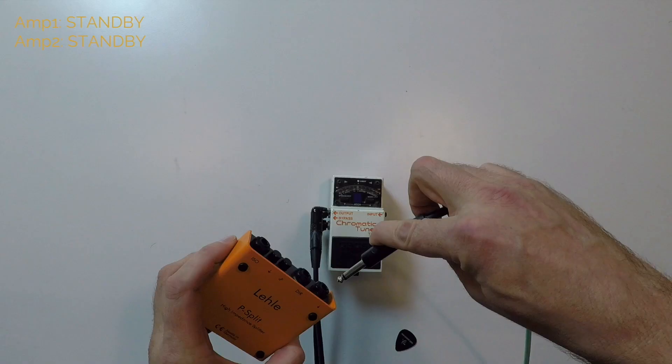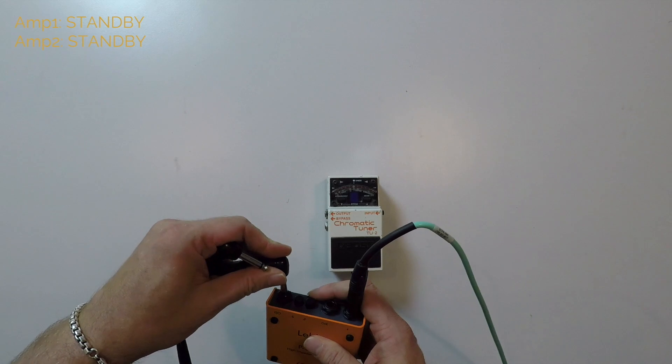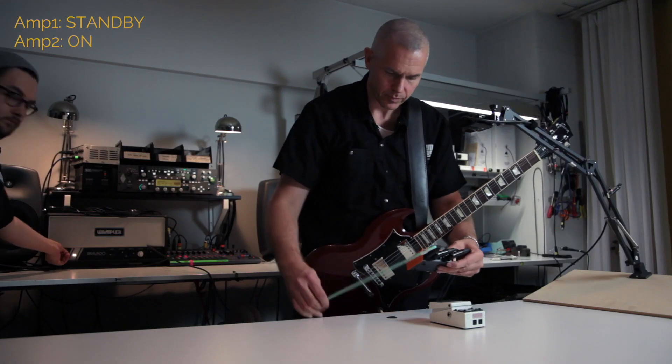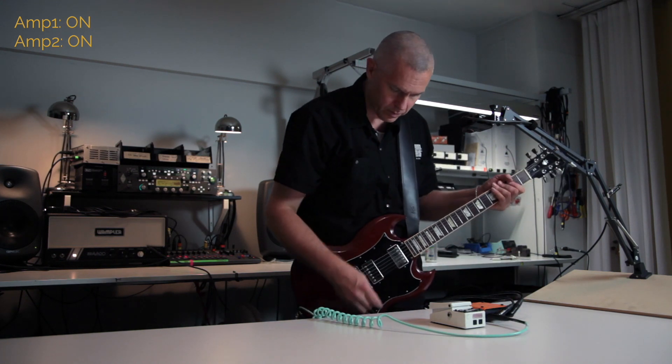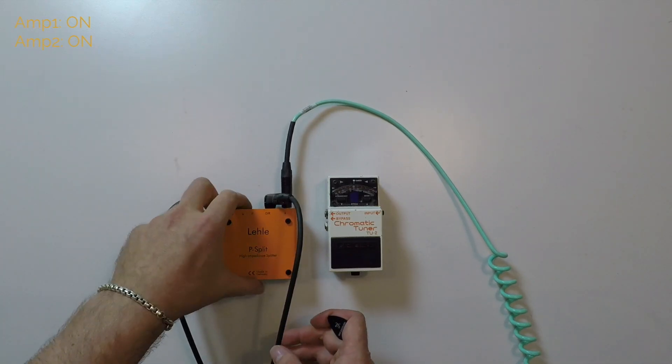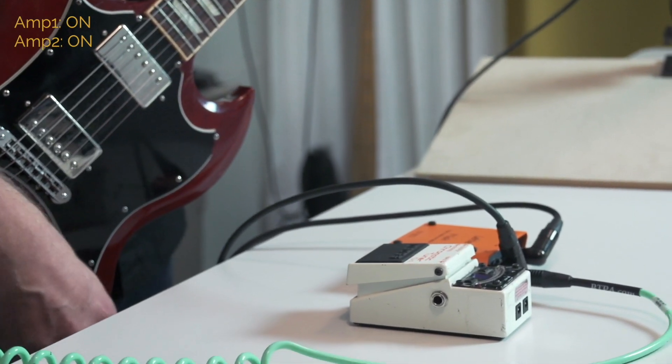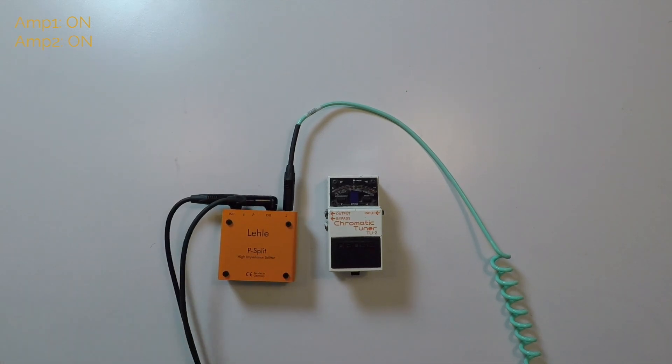So I am now putting my guitar here and connecting one to ISO, the other to direct. And then we can listen what happened. Now we have the same noise that we did have before. Now we have both amplifiers on. And now it's off.